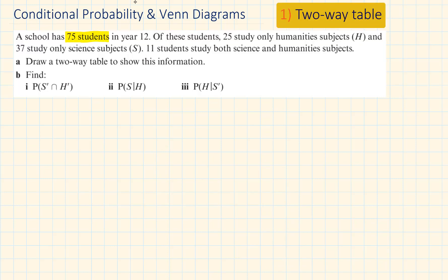A school has 75 students in year 12. Of these students, 25 study only humanities subjects and 37 study only science subjects. 11 students study both science and humanities subjects. For point A, draw a two-way table to show this information.